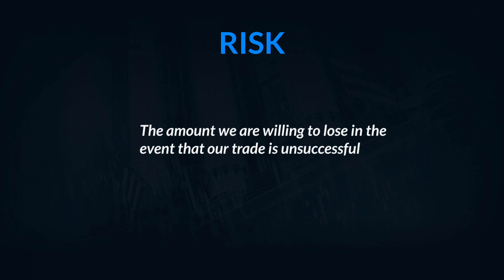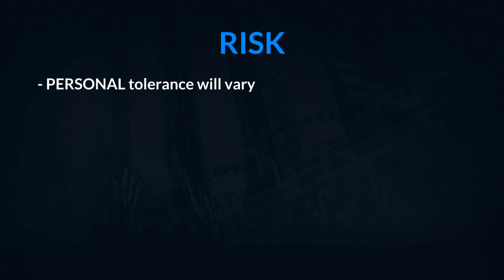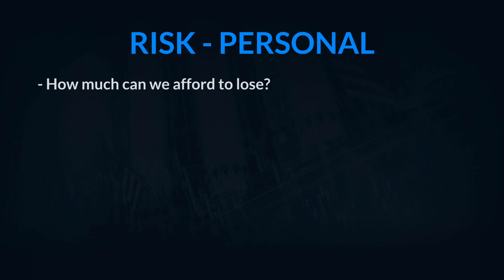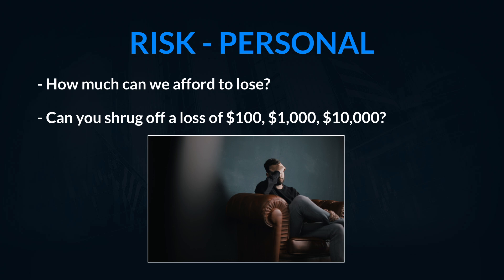As we begin our discussion on risk, reward, and probability, we'll start with risk. Risk is simply the amount of money that you're willing to sacrifice if a trade goes wrong. We have to look at risk in several different lenses: how risk relates to us personally, to the instrument we're trading, and to the environment we're trading in. When thinking about risk from an individual's perspective, we have to consider our overall situation. If losing a thousand dollars puts me in a bad mood, then that's too much risk for me, even if my account can handle it.